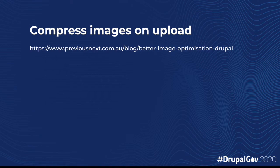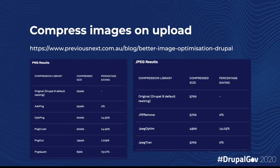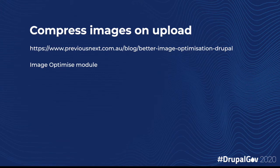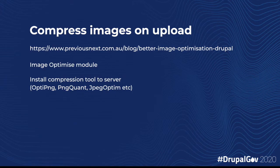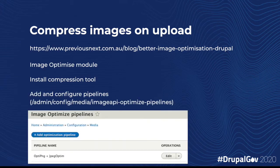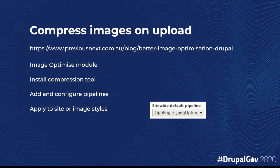We can reduce this friction using the Image Optimize module and installing server-side compression tools. Depending on the tool and the settings we use, we can make some impressive gains. After installing your compression tool to the server and enabling your module, head over to the Image Optimize admin tab, add your processes to the pipeline, and either set it as the default site pipeline or add it to individual image styles through the Image Styles admin. This is a good option if you want lossy compression as default, while some individual images need lossless compression — profile images would be a good example of this.